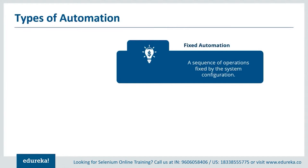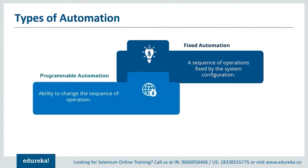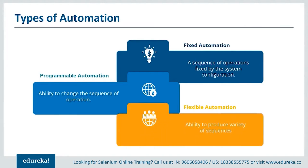Fixed automation is mainly used in the mechanical industry to carry out a desired job. Now let's take a look at programmable automation. Programmable automation can be used to change the sequence of any operation based on the requirements specified by the user. It has made it to the front end of the user interface by providing various options to the user to edit the sequence as per the requirements. Flexible automation can inherit both fixed as well as programmable automation and has the ability to produce a variety of sequences that are not limited to one static type.